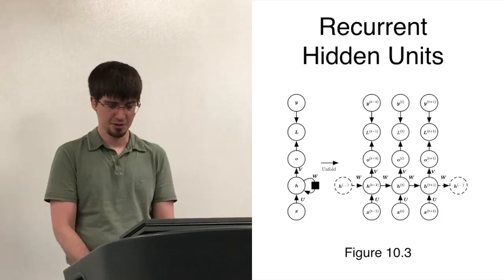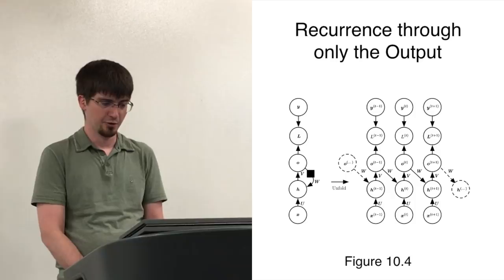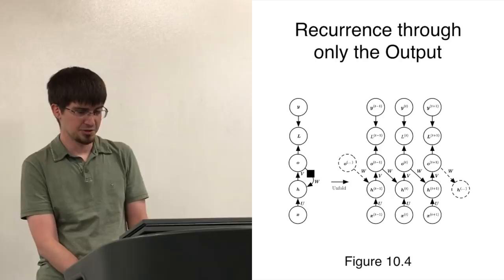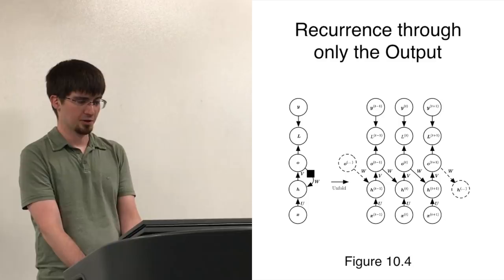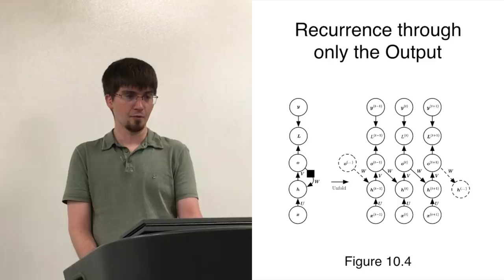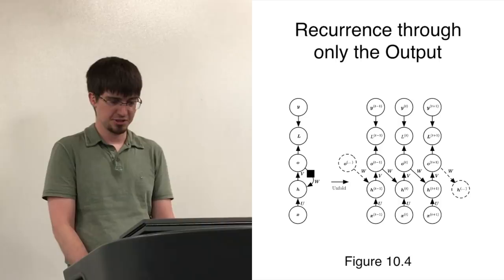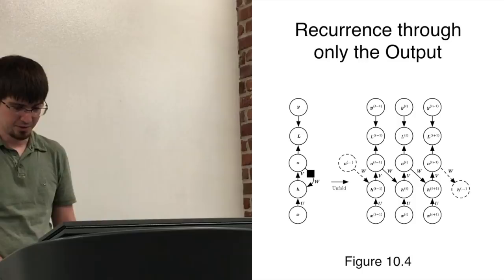Some special structures of recurrent networks — where recurrence happens only through outputs — make training more efficient. At each time step we get input x, produce hidden representation h, and produce output o. If we're looking at a text sequence, maybe we're predicting the next word after x. The output word predicted is fed back into the model to help predict the next word, but there are no arrows going from hidden representation h to h. This lets us avoid running the backpropagation through time algorithm. Instead, we can use a technique called teacher forcing that I'll describe in a few minutes.